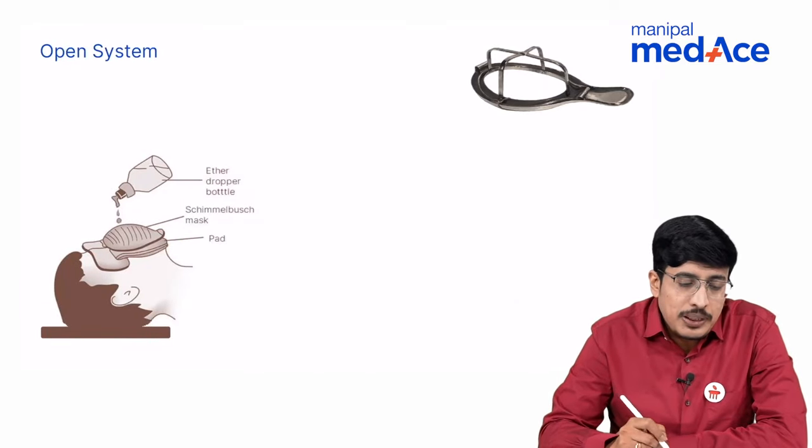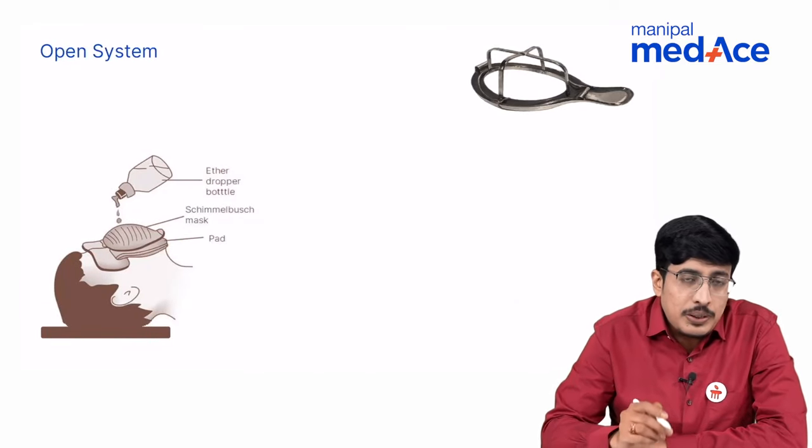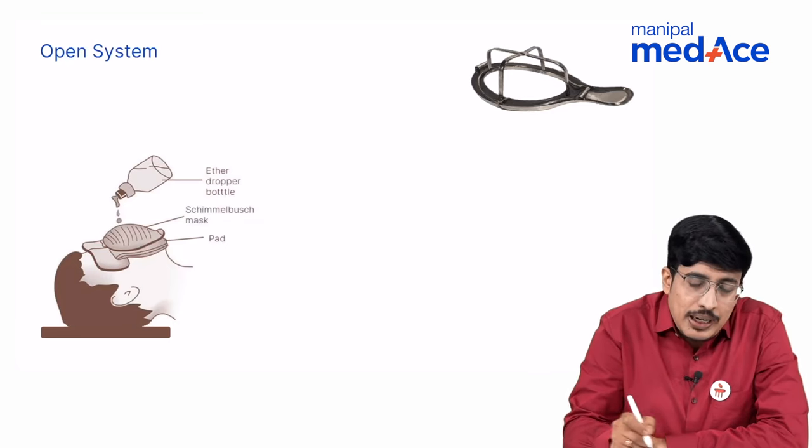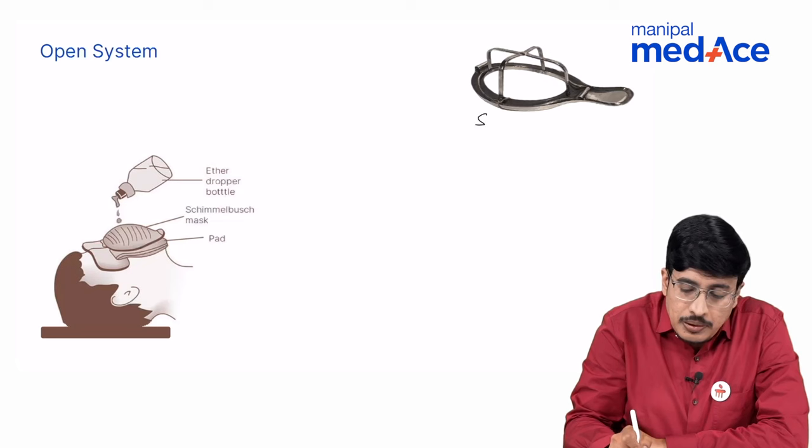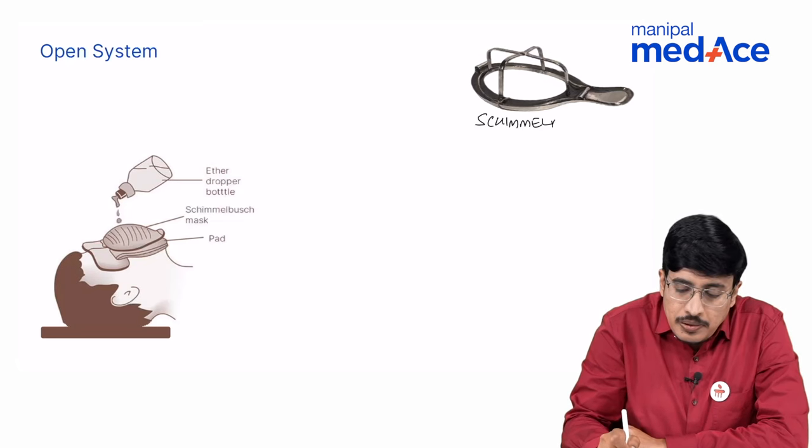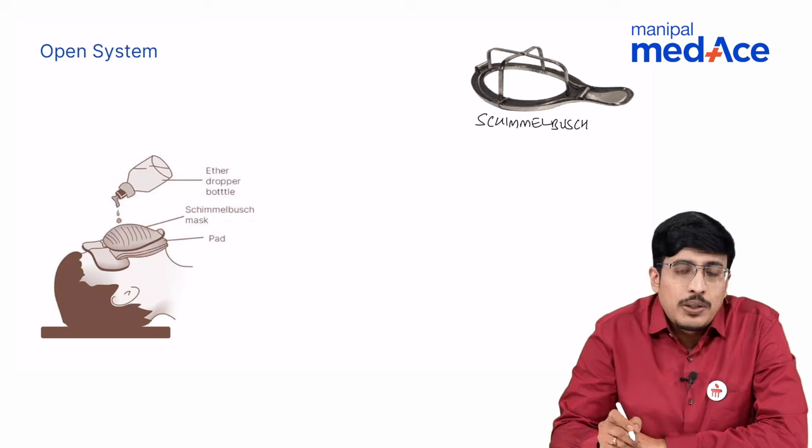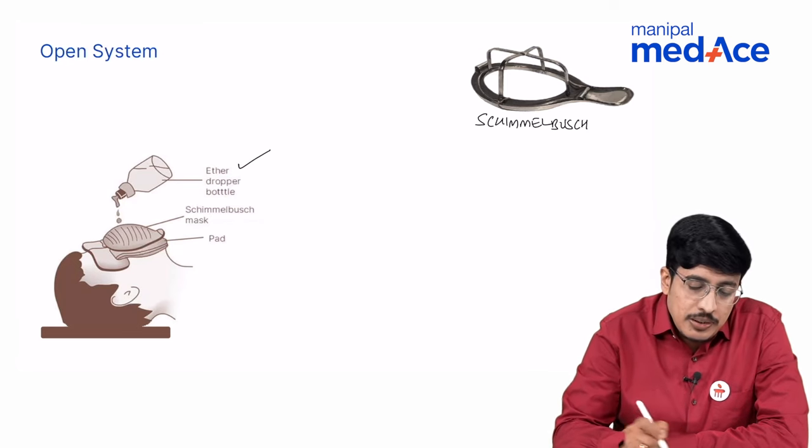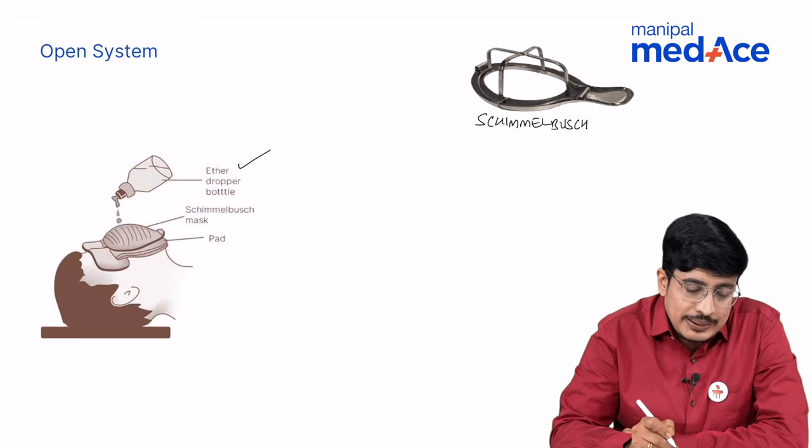The open systems were the original breathing systems where it all started with Schimmelbush who designed this Schimmelbush mask to deliver ether and chloroform for anesthesia.